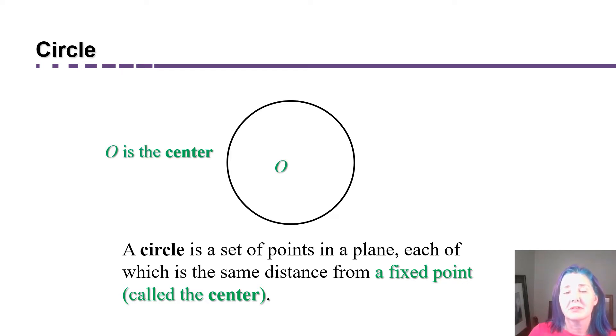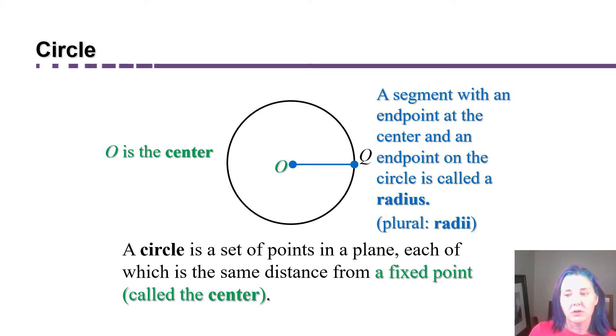In this circle, I'm going to label the center O, and O is going to be the same distance from any point on the outside of the circle. I'm going to label this other point Q. So the segment that joins O and Q is an example of a radius.